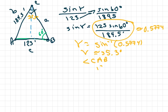you're just going to take 180 degrees minus your 60 minus your 35.3 degrees, and that gives you 84.7 degrees.